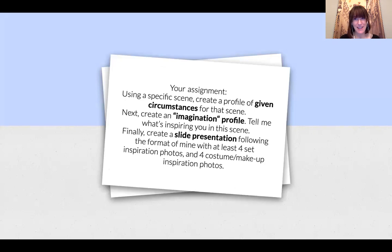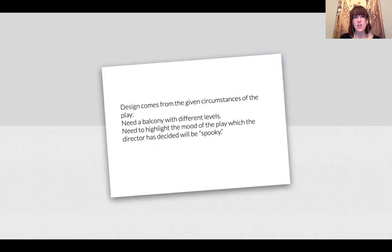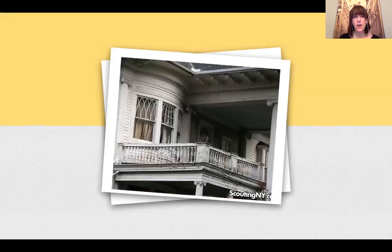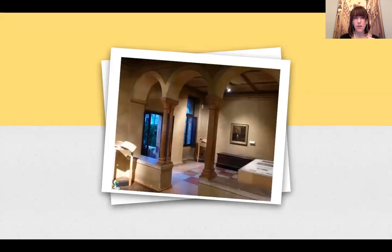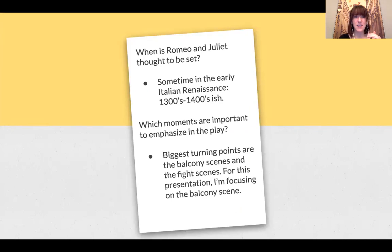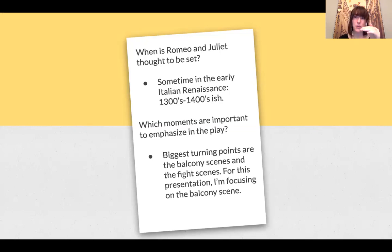Your assignment is to pick a specific scene from that big list you should have made and create a profile of the given circumstances for that scene. In one of my earlier slides I showed you that the given circumstances include the early Italian Renaissance, 1300s to 1400s, and that the biggest turning points are the balcony scene and the fight scenes. You'll need to show me that you can analyze the play, highlight the most important scenes, and from those you're going to choose one to do this assignment in.